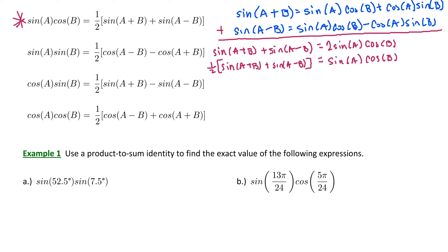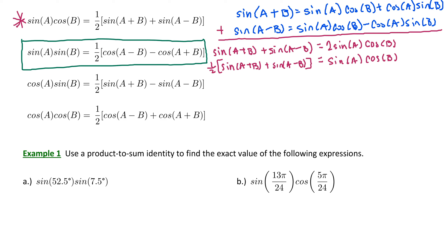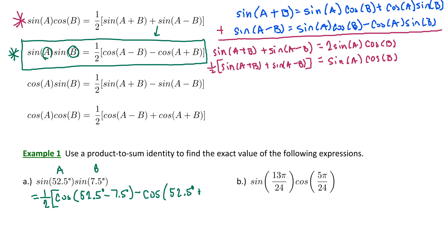Example one says to use a product-to-sum identity to find the exact value of the following expressions. We have sine of 52.5 degrees times sine of 7.5 degrees. Notice the pattern: it's a sine times a sine, which matches the left-hand side of our second formula. So we can expand this according to the right-hand side, where the first angle a is 52.5 degrees and the second angle b is 7.5 degrees. Following the pattern, we rewrite this as one half times cosine of a minus b — that is, 52.5 minus 7.5 degrees — minus cosine of a plus b, which is 52.5 plus 7.5 degrees.